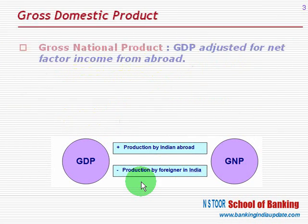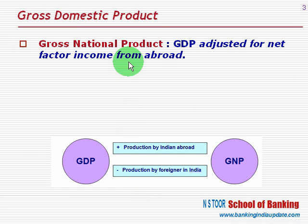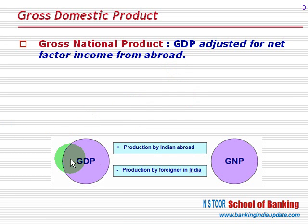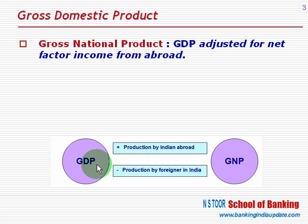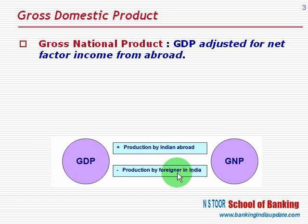There is another concept called Gross National Product. Gross National Product is GDP adjusted for net factor income from abroad. So we adjust the value of GDP by adding the production by Indians abroad or Indian entities abroad, and deducting the production by foreign entities in India. The gap between these two is called net factor income from abroad.